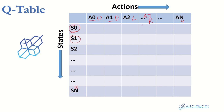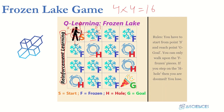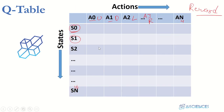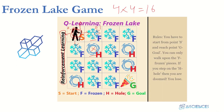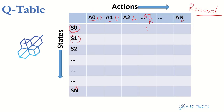Let's say the agent chooses to go right and gets some reward. Reward is a thing that if our agent takes any step, it will get some positive or negative reward — negative reward is also called punishment. If it takes a good step (e.g., goes right without dying) it gets a positive reward like +1. But if it goes into a hole it gets zero reward, which is a negative outcome.